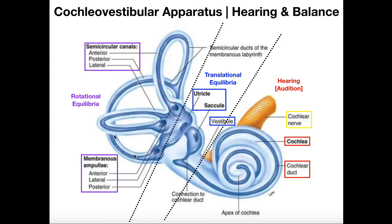Everything to the left of this dotted line is the vestibular apparatus. The vestibular apparatus can be further broken down into two regions that differentiate based on function. Looking between these two dotted lines right here, this is a region that deals with translational equilibrium, and the region is referred to as the vestibule — that's actually where the term vestibular comes from.